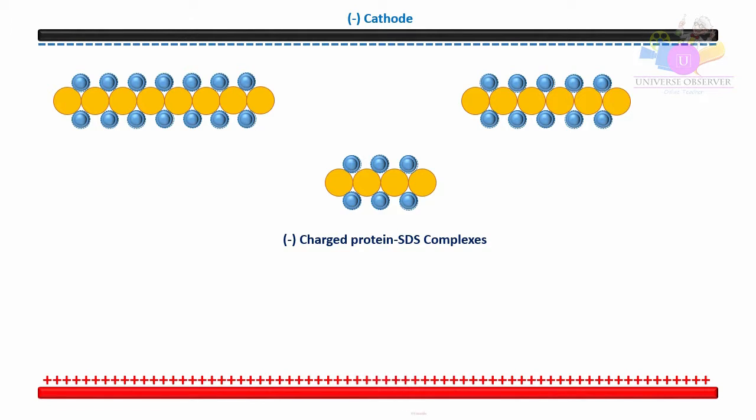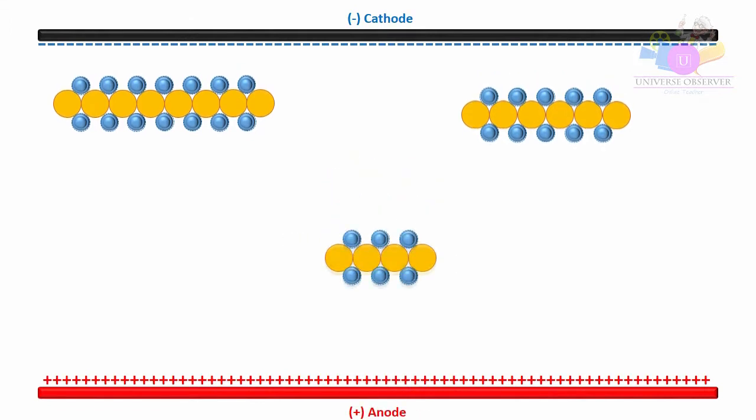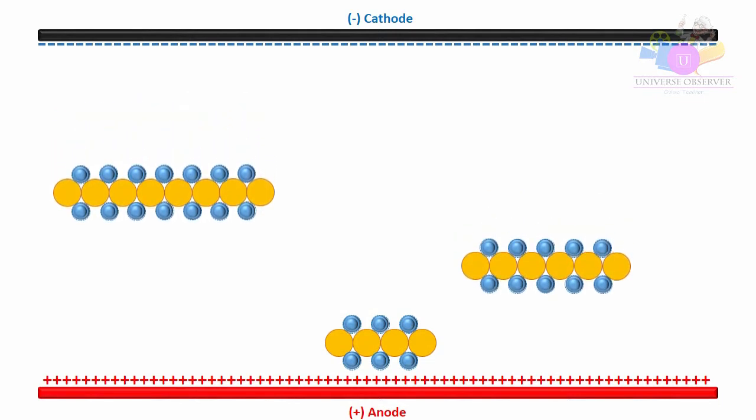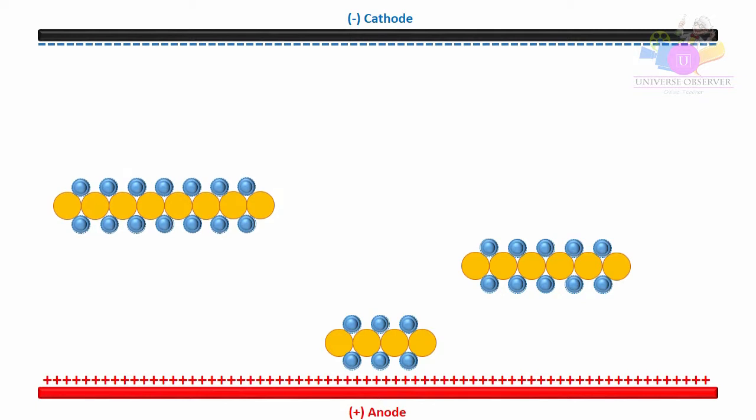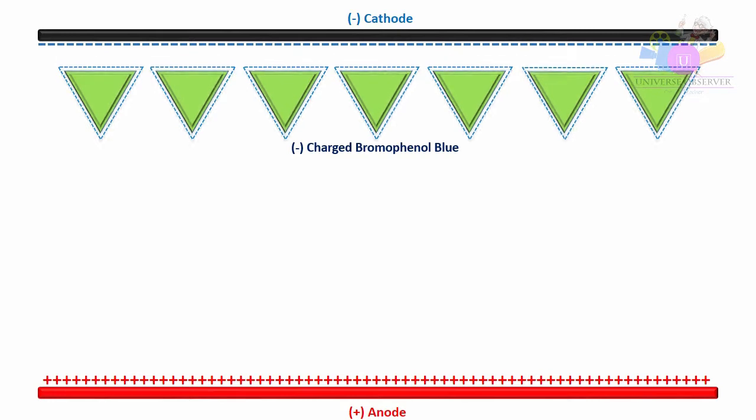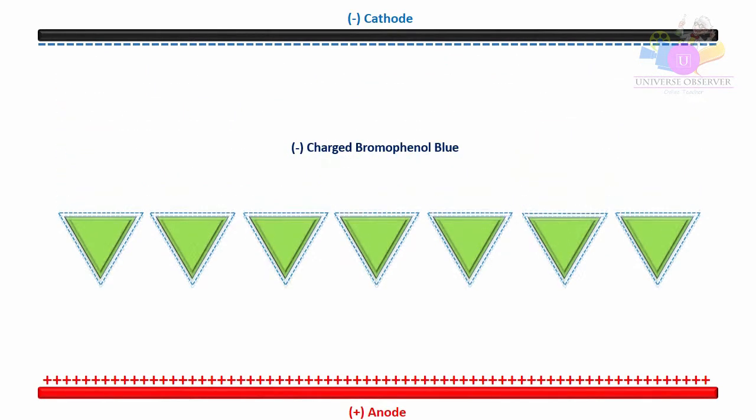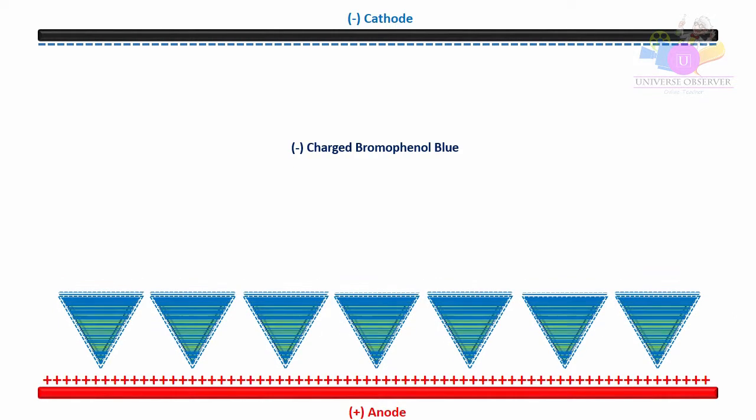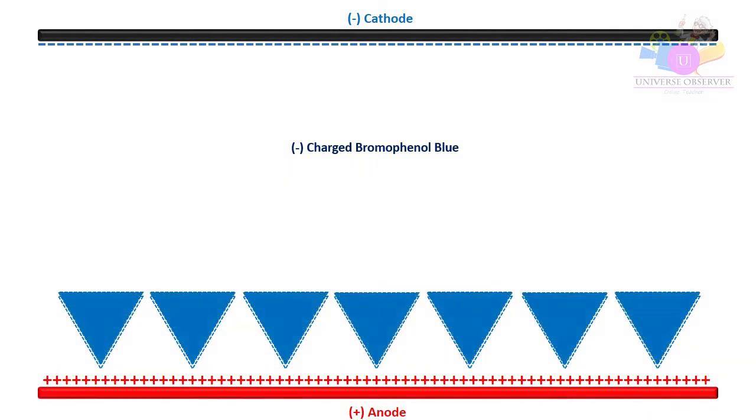Now all protein molecules are negatively charged, so they move from cathode to anode, from negatively charged electrode to positively charged electrode during electrophoresis. Bromophenol blue is acting as a tracking dye with negative charge, moving from cathode to anode. We can monitor the electrophoresis process by this tracking dye.